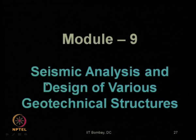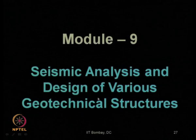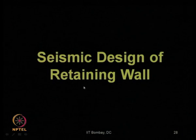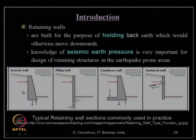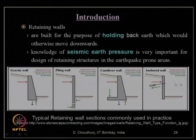Module 9 covers seismic analysis and design of various types of geotechnical structures, including retaining walls, foundations, waterfront retaining walls or seawalls, MSW landfills, piles, tailing dams, slopes, etc. We begin with seismic design of retaining walls. Types of retaining walls include gravity type, piling wall, cantilever type, and anchored sheet pile wall — the first two being rigid walls and the last being flexible walls.